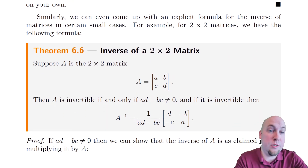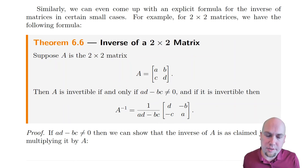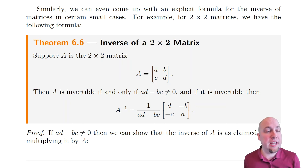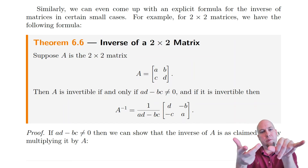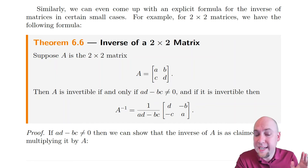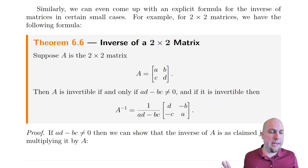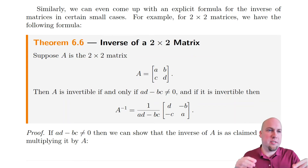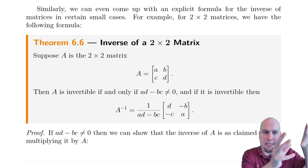You can prove the other direction as well — if AB equals the identity, then A is invertible and B is the inverse. So all those times we checked two-sided multiplication, it was overkill. One-sided is enough. The final theorem for this week says that if you're working with two-by-two matrices, you can actually get an explicit formula for the inverse. For three-by-three and larger, explicit formulas exist but are absolutely horrendous to use — no one uses them in practice. So if you're working with a three-by-three or larger, just use the row reduction method: augment with the identity and row reduce.